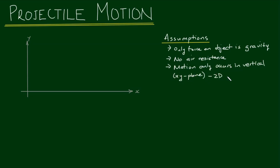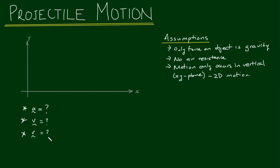So it's only a 2D motion with horizontal and vertical components. What we're going to find is an expression for the acceleration as a vector equation, an expression for the velocity as a vector equation, the position as a vector equation, and we're going to formulate an equation for the trajectory of the object.